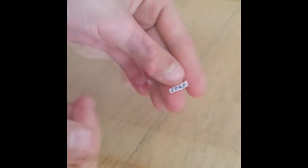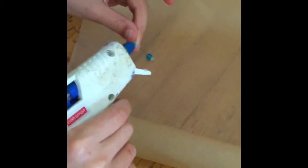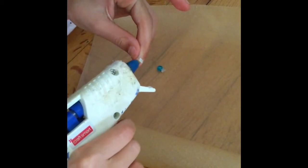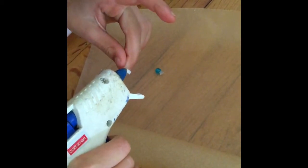So now I take this tiny writing that says soap, and I'm just gluing it onto the soap dispenser so that it is obvious that it is a soap dispenser.